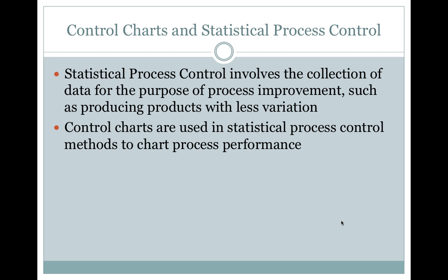Control Charts and Statistical Process Control. Statistical process control involves the collection of data for the purpose of process improvement, such as producing products with less variation. Control charts are used in statistical process control methods to chart process performance.